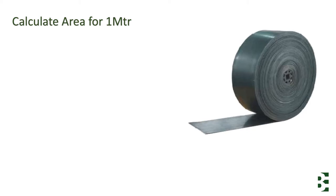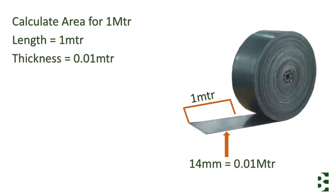Now first of all we need to calculate the area for one meter belt. Here you can see the length is one meter and we have a thickness of 14 mm, and we have an area for one meter of 0.01 meter square.